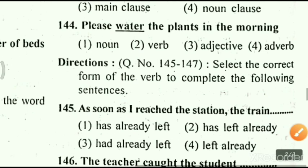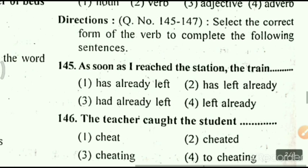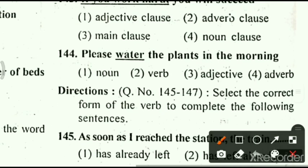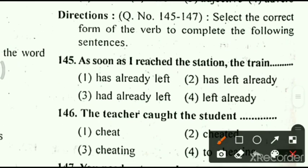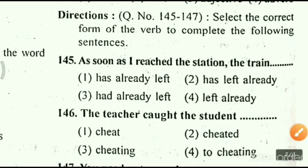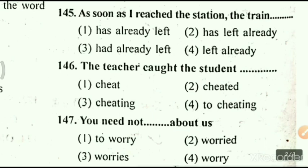From question number 145 to 147, we have to select the correct form of the verb to complete the sentences. Question number 145: as soon as I reached the station, the train dash. Options: option 1, has already left; option 2, has left already; option 3, had already left; option 4, left already. Question number 146: the teacher caught the student dash. Options: option 1, cheat; option 2, cheated; option 3, cheating; option 4, to cheat. The right answer is option number 3, cheating.